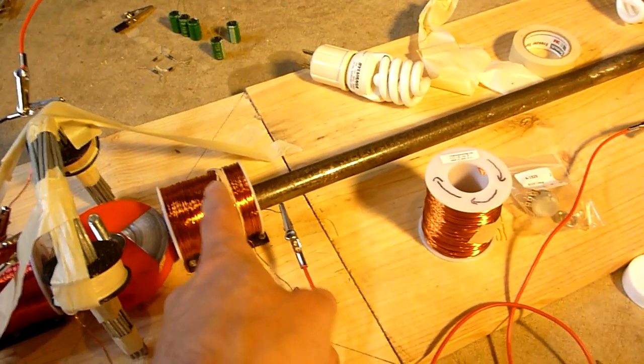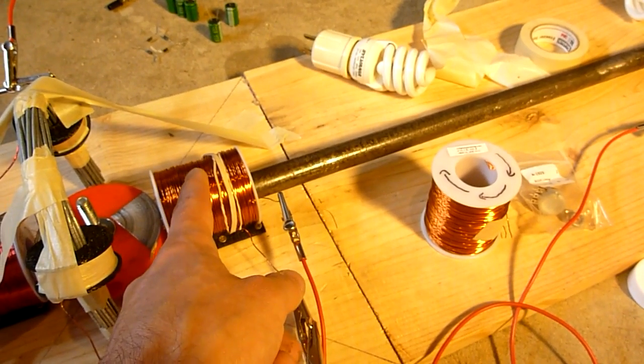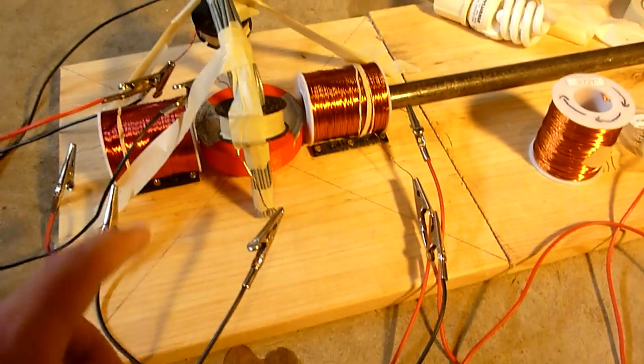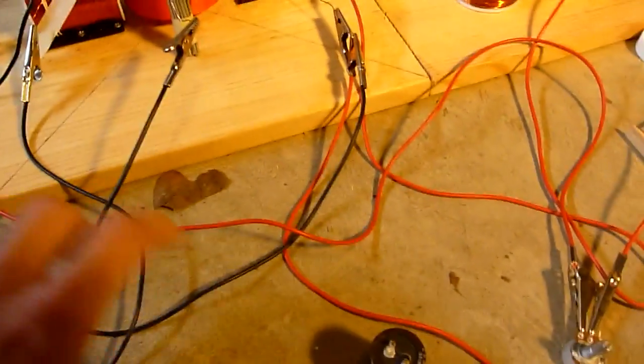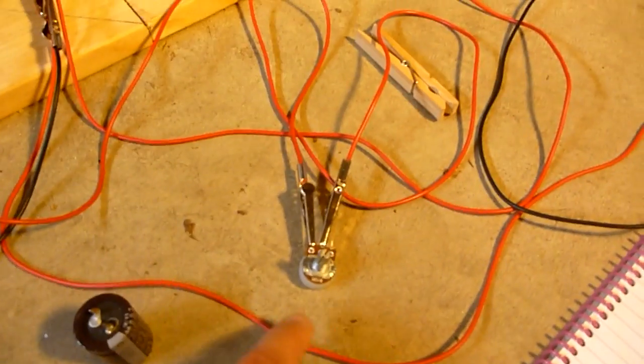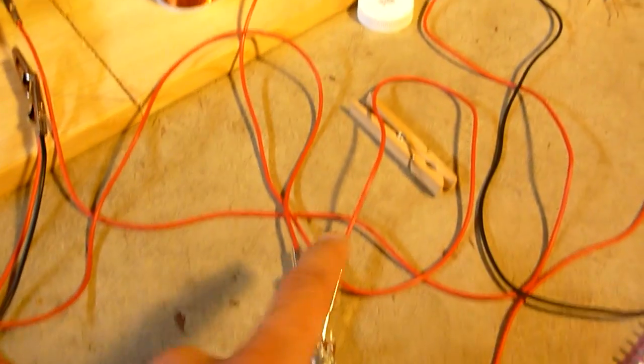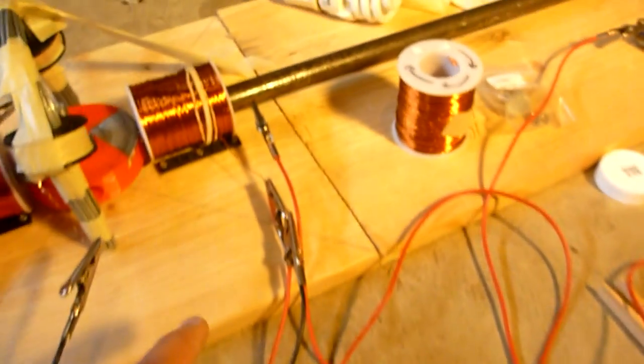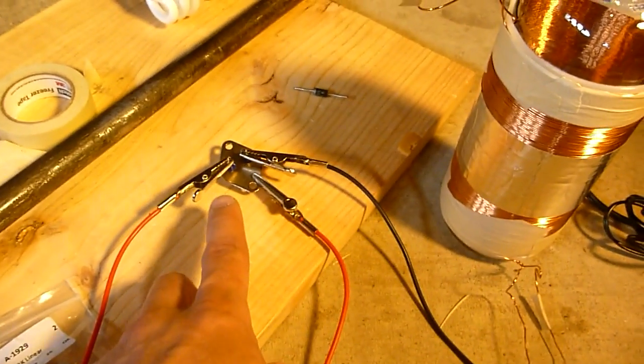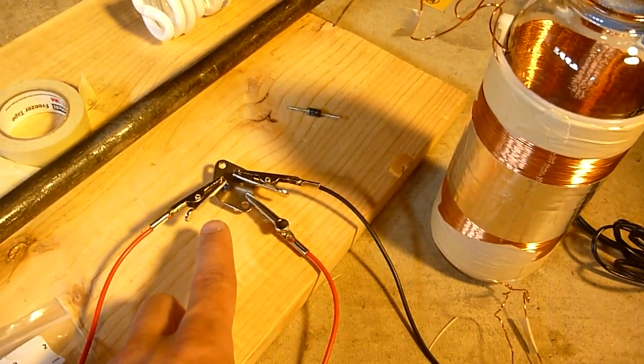And then this is 26 gauge wire coil, one pound. This is 23 gauge wire, one pound. And the end of this coil goes to a 12K potentiometer, and then from the 12K potentiometer it goes to the base of a transistor.